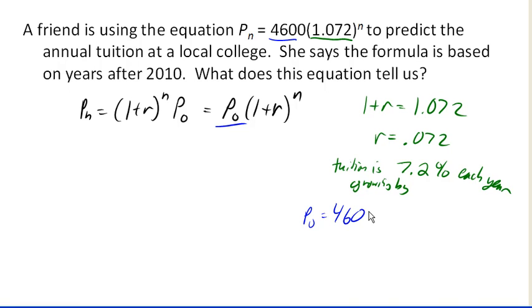Our p-value is being measured in tuition, which suggests that it's going to be measured in cost. And so the tuition, when n equals 0, n equals 0 corresponds to the year, years after 2010. So 4,600 is the tuition in 2010.